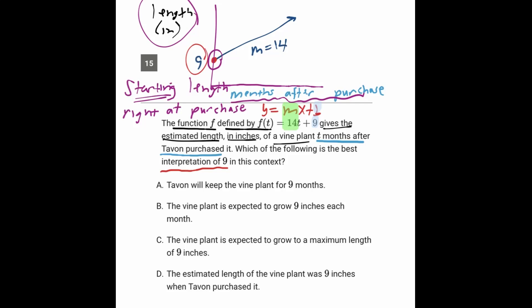And which answer says that? And that's answer choice D. The length of the vine plant was nine inches when the person first purchased it. So that's D here.